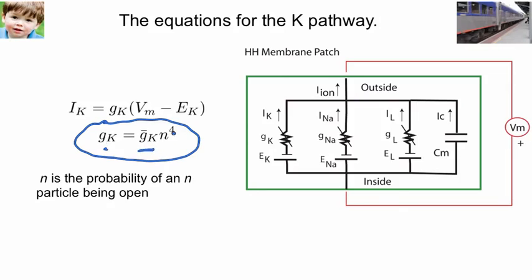The maximum it could ever have, that's signified by this bar over the GK, the maximum value, times this other quantity into the fourth.